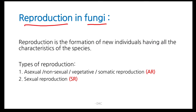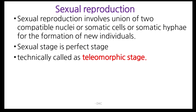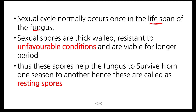Reproduction in Fungi. Reproduction is the formation of new individuals having all the characteristics of the species. There are two types: AR (asexual/non-sexual/vegetative/somatic reproduction) and SR (sexual reproduction). SR involves union of two compatible nuclei, somatic cells, or somatic hyphae for the formation of new individuals. SR is also known as the perfect stage or telomorphic stage. Sexual cycle normally occurs once in the lifespan of a fungus. Sexual spores are thick-walled, resistant to unfavorable conditions, and viable for a longer period.